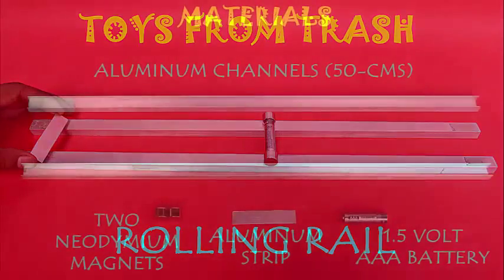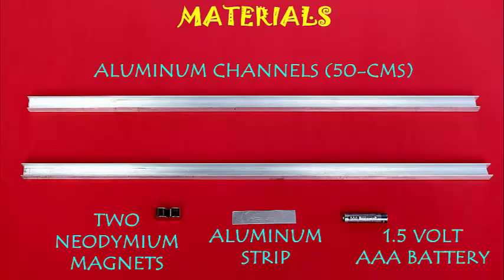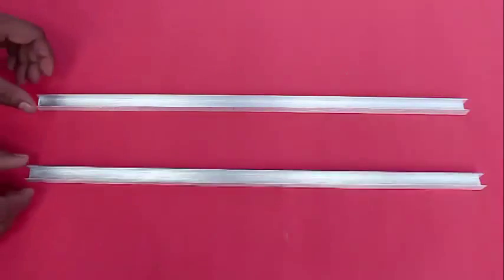You need a couple of neodymium magnets, metallic channel or track for the train to run on, an aluminum strip, and a battery.